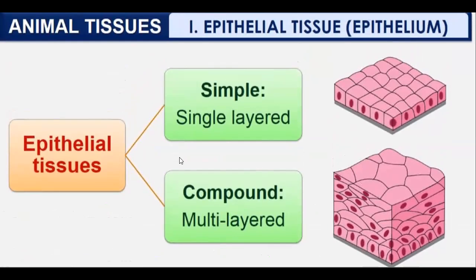Epithelial tissue is of two types: simple, which is single-layered, and compound, which is multilayered. In simple epithelium there is a single layer of cells forming the whole tissue, whereas in compound epithelium there are multiple layers one on top of another.